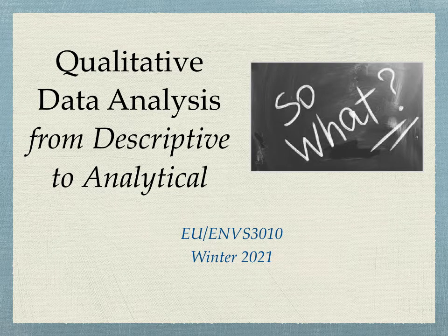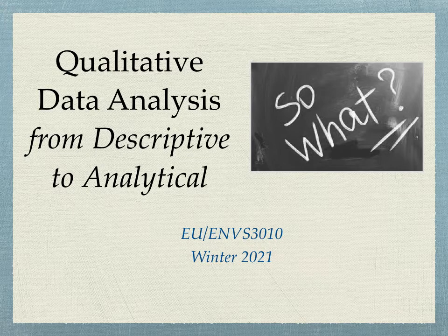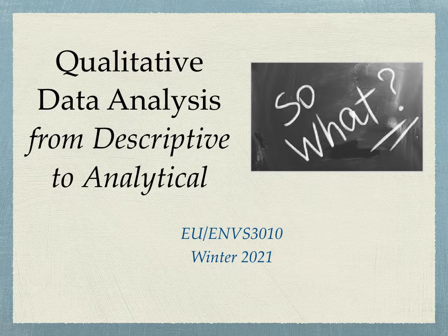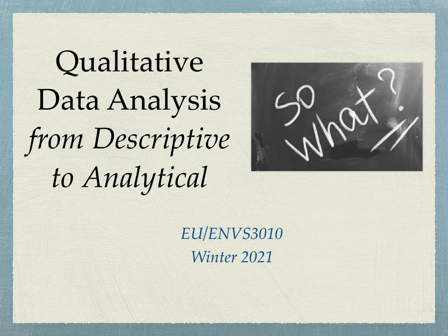Hello everyone. Today we are going to be moving, as we have been discussing, through our process of exploring qualitative data analysis — moving beyond the coding stage where we're moving from the descriptive to the analytical. So what does it mean to identify the codes and categories that we're looking at? What do we do with these ideas that are coming forward and how do we put them together through an analytical stance that presents a theory or an emerging response to our research question?